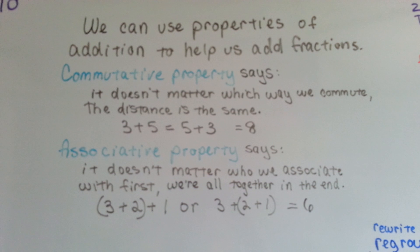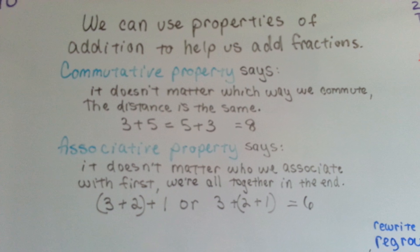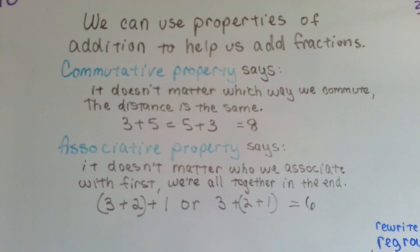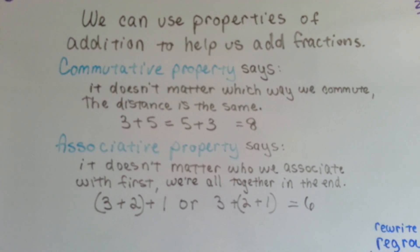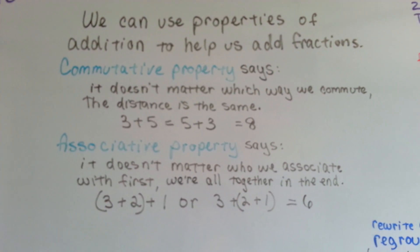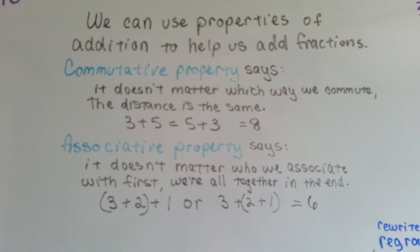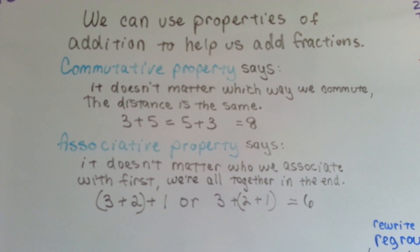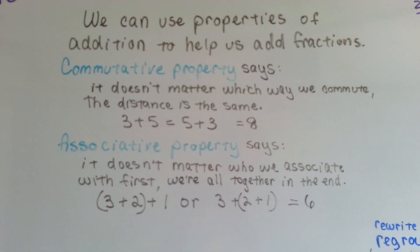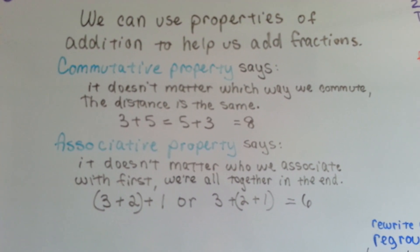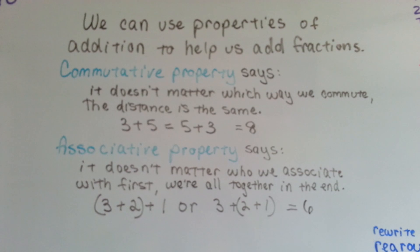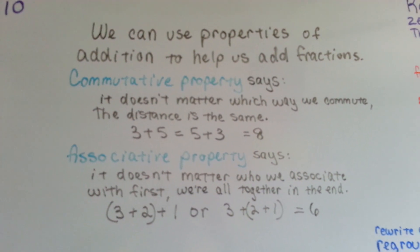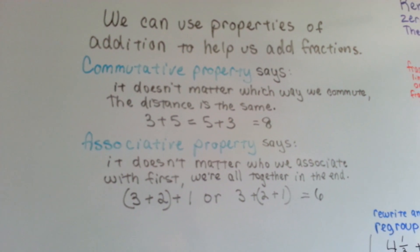For the associative property, it says it doesn't matter who we associate with first — we're all together in the end. We can add 3 plus 2 and then add 1, or we can add the 2 plus 1 and then add the 3. It's still going to equal 6. It doesn't matter who we associate with together first.